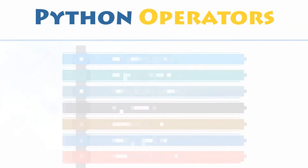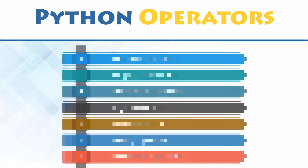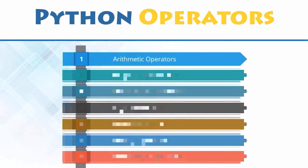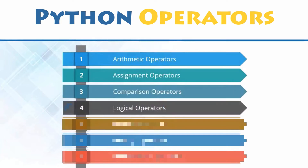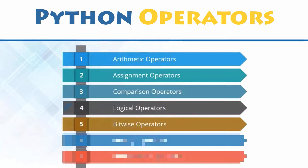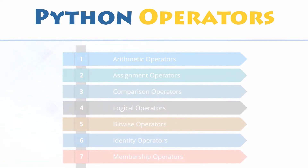Types of operators. Depending upon the type of operations you want to perform, there are seven types of operators in Python: arithmetic operators, assignment operators, comparison operators, logical operators, bitwise operators, identity operators, and membership operators.